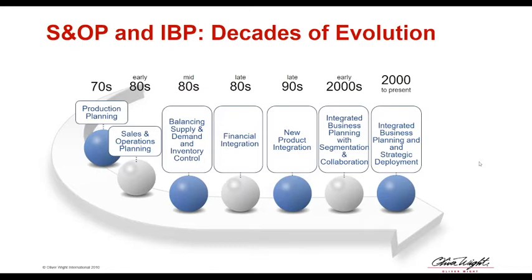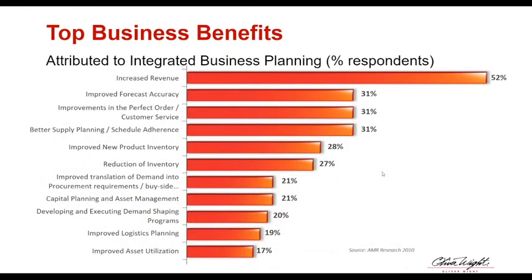What is the main benefit of IBP? The number one benefit seen in companies doing this well to Class A standard is profit growth and top-line growth. Research published by AMR in 2010 — when IBP had only been named for about five years — showed that over 50% of respondents cited increased revenue as a key benefit. For Oliver Wight, this is critical because commercial people become the driver rather than supply chain.